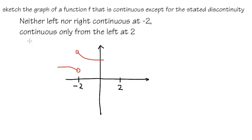On the second condition, it says I want the function to be continuous only from the left when x is equal to 2. So let me just continue with my graph. You can draw whichever way that you want for the graph, it doesn't really matter.